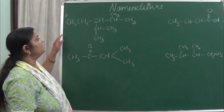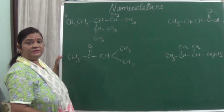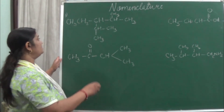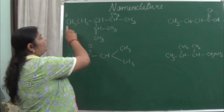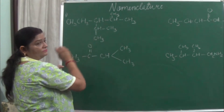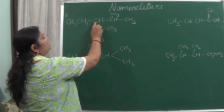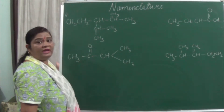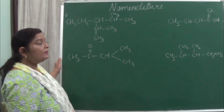Okay, first example — you can see on the board. The first rule is to take the longest chain. So let us count: counting from one side gives 5 carbons, and counting from other sides also gives 5 each. Since all sides give 5, we need to look further.